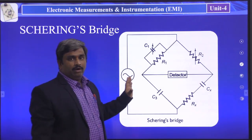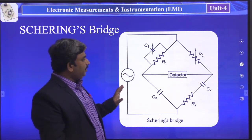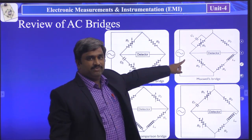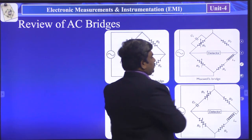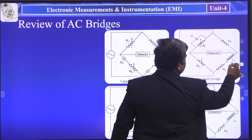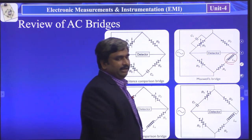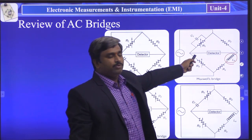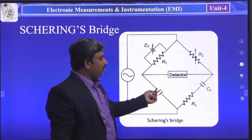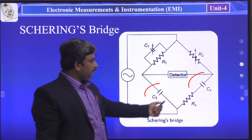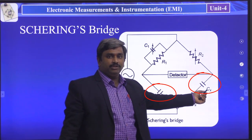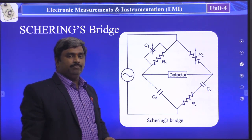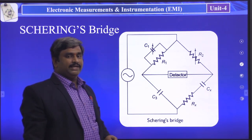The Schering Bridge is almost similar to the previous Maxwell's Bridge. In Maxwell's Bridge, except for the inductance component, the remaining components are almost the same as the Schering Bridge. In the place of the inductance, we have placed a capacitor. So this is also a modification of Maxwell's Bridge.